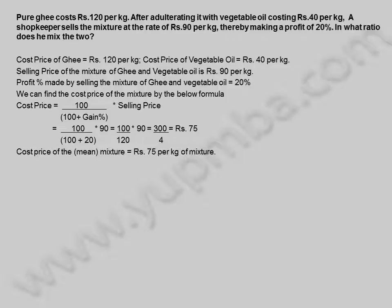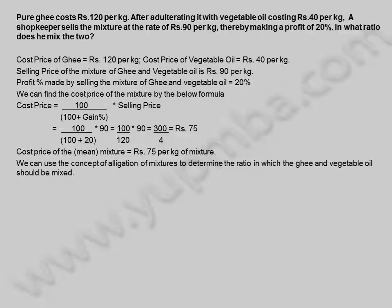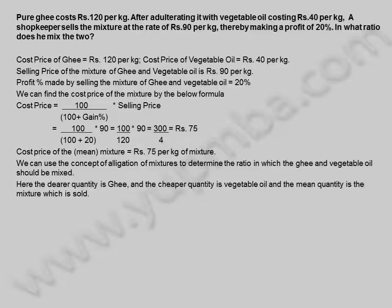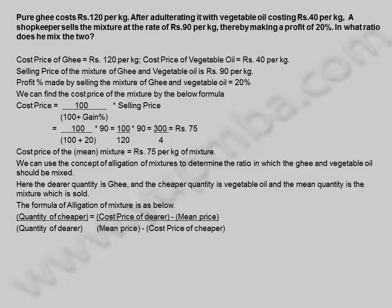Cost price of the mixture is 75 rupees per kilogram. We can use the concept of allegation of mixtures to determine the ratio. Here the dearer quantity is ghee and the cheaper quantity is vegetable oil, and the mean quantity is the mixture. The formula is: quantity of cheaper / quantity of dearer = (cost price of dearer − mean price) / (mean price − cost price of cheaper).